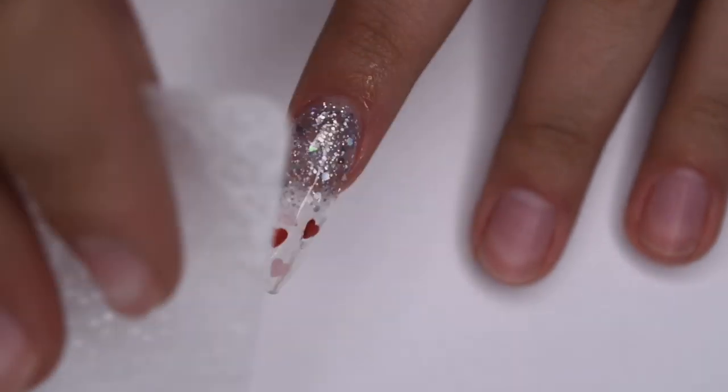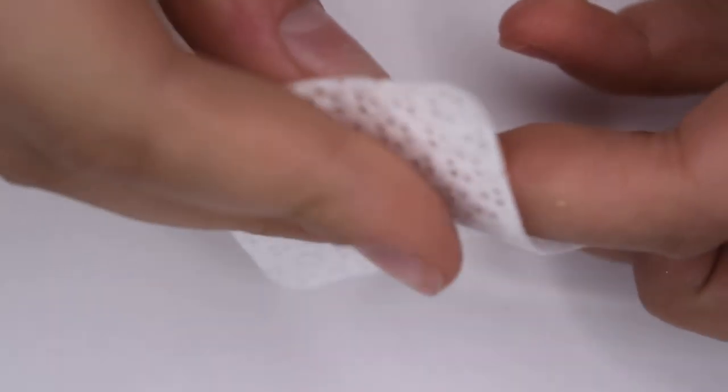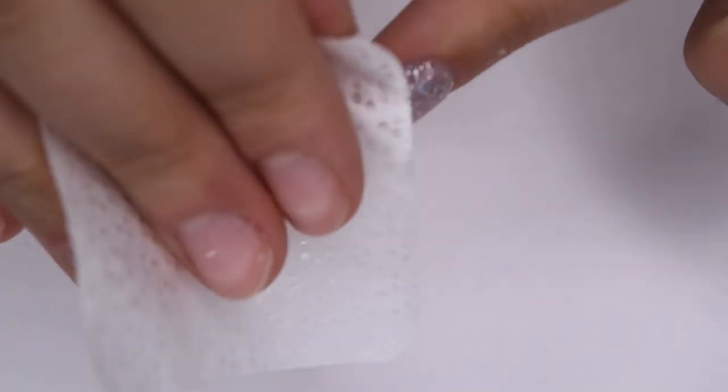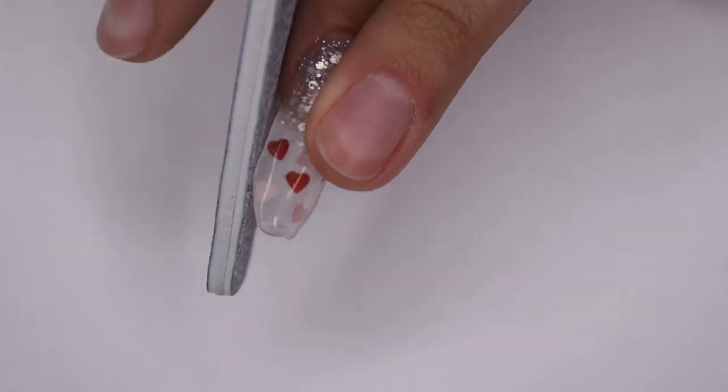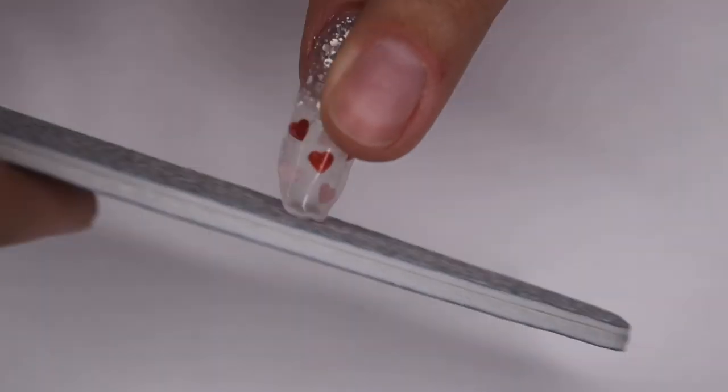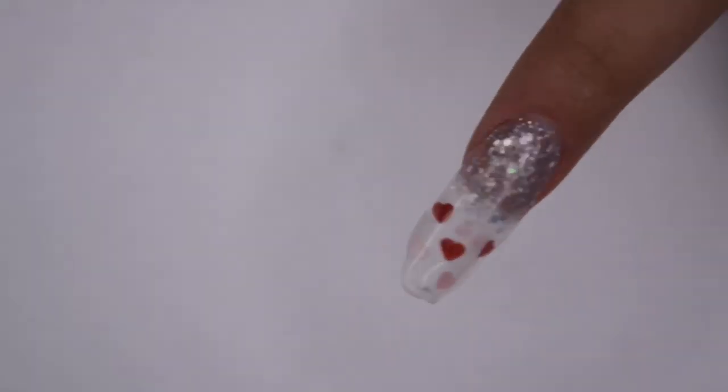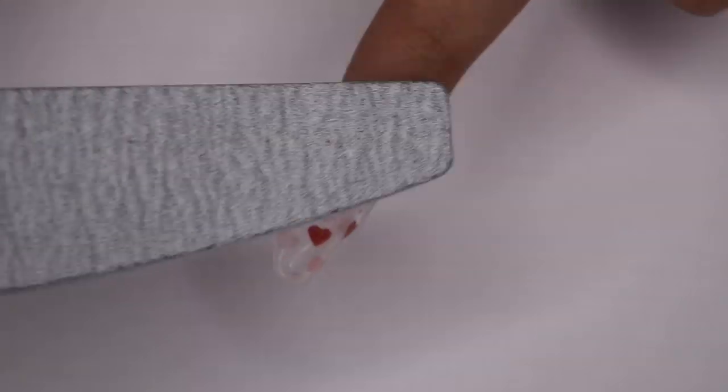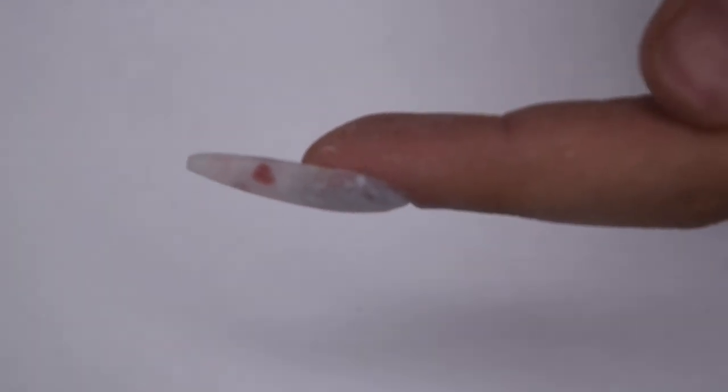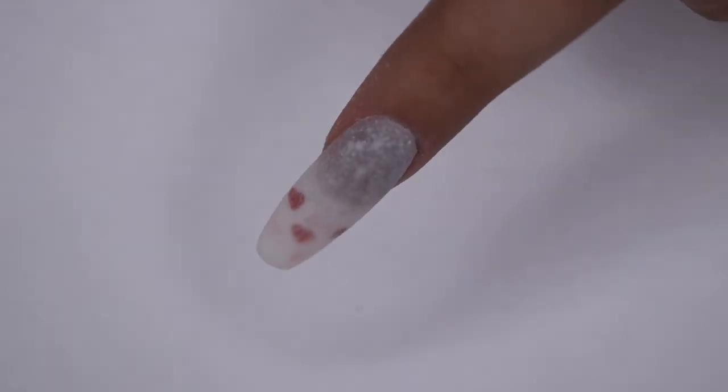And here is the nail after being cured. And now I'm just taking a lint-free wipe and some rubbing alcohol to cleanse off the tacky layer. And once I've done that, I'm going to go in with my hand file to perfect my shape and also fix the structure of the nail. So I started by going along the sidewalls and free edge to make my shape exactly how I want. And then I also went over the top of the nail to smooth out any lumps or bumps. And then here is the nail after filing and shaping. And you can see the beautiful structure and shape right here.